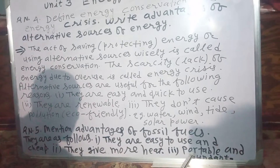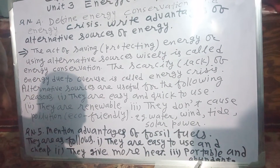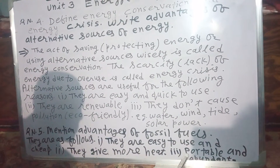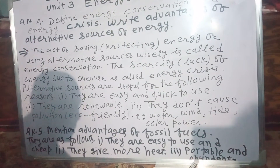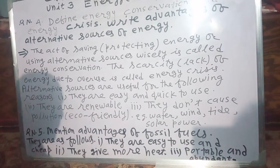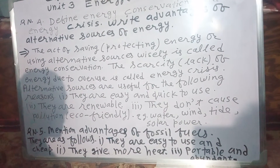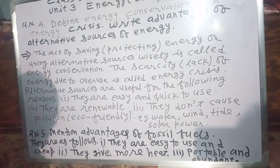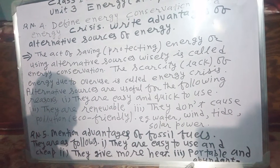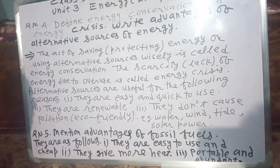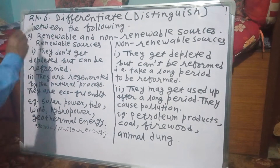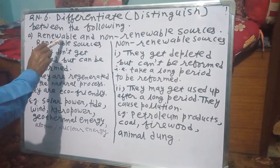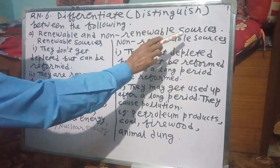Number three: fossil fuels are portable and abundant. Portable means they can be carried from one place to another easily on vehicles. Abundant means they are found in large quantities inside the earth's crust, so we can use them properly in large quantities.